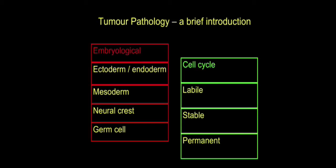Anything in between is mesodermal. There are also other specialist cell types to consider in the embryo. The first is the neural crest cell — specialist cells that, as the name implies, come from the very early part of the neural tube. There are also cells which are destined to become the germ cells — either oocytes in the ovary or spermatozoa in the testis. We need to think about those because they can also potentially give rise to tumours.